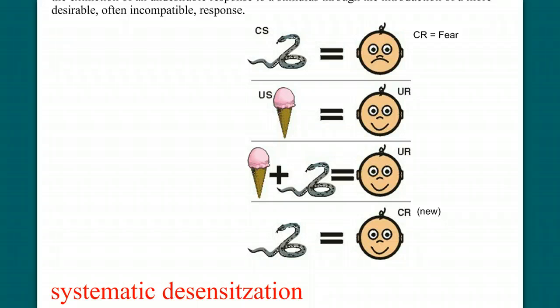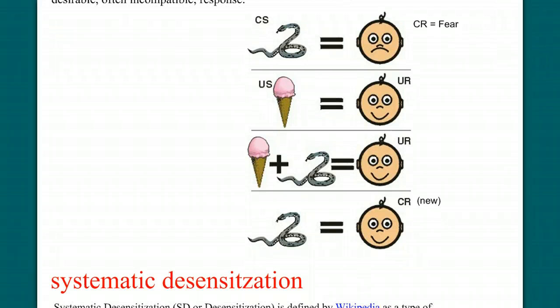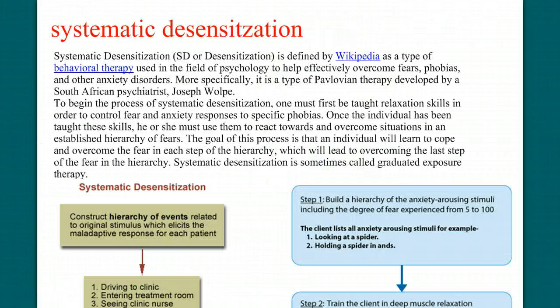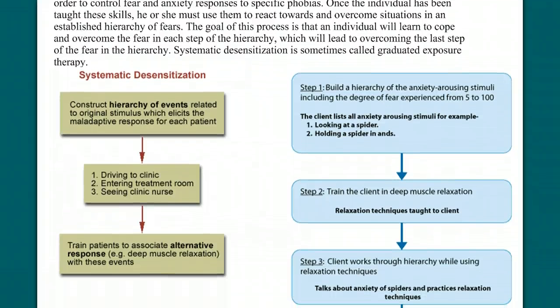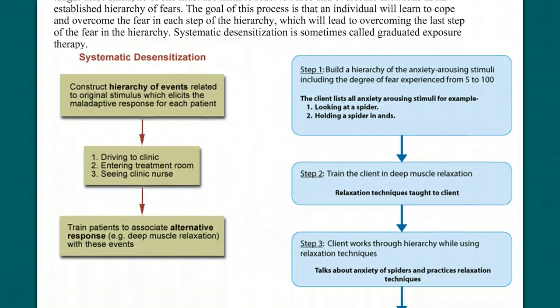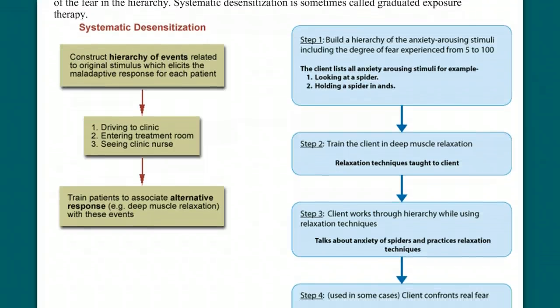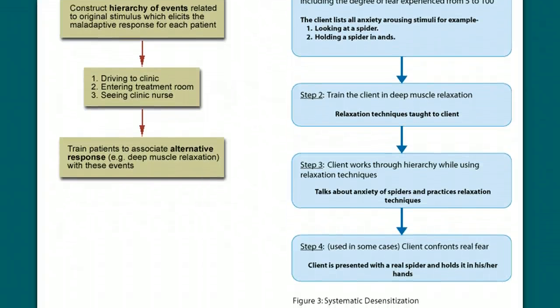But we can use that in a larger process called systematic desensitization, which is a process we use to eliminate certain fears and phobias. Typically, if there's a strong reaction to something, maybe a fear of heights or a fear of spiders or a fear of anything, we can slowly and systematically desensitize someone to that stress. We'll talk about this process more in class, but sometimes this is called graduated exposure therapy, where we expose someone to the offending stimulus a little by little and eventually extinguish their response, their negative response to that stimulus.